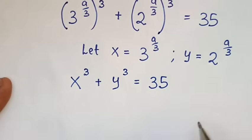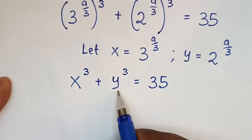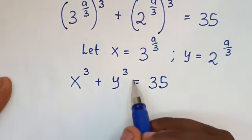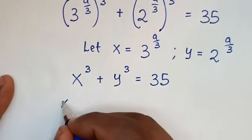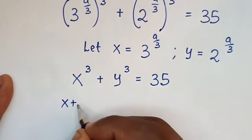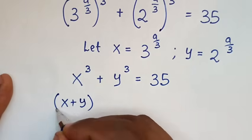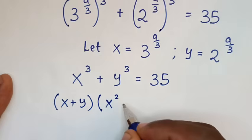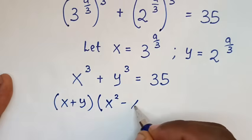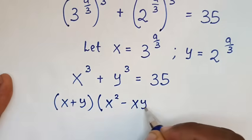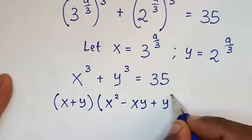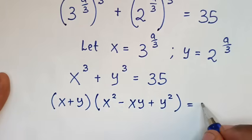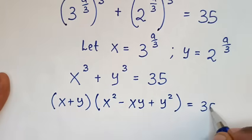In the next step, x power of 3 plus y power of 3 is the same as x plus y, bracket, times x squared minus xy plus y squared, bracket, is equal to 35.